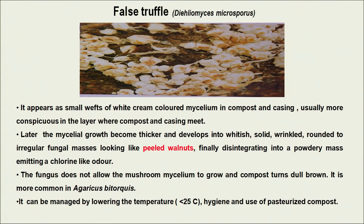False ruffle disease appears at high temperature. A characteristic identification mark is that at later stages the fungus gives peeled walnut or brain-like structures on the mushroom beds. We can manage this by lowering the indoor temperature, because if during spawn run or fruiting the temperature is higher than 25°C, there are more chances of false ruffle.